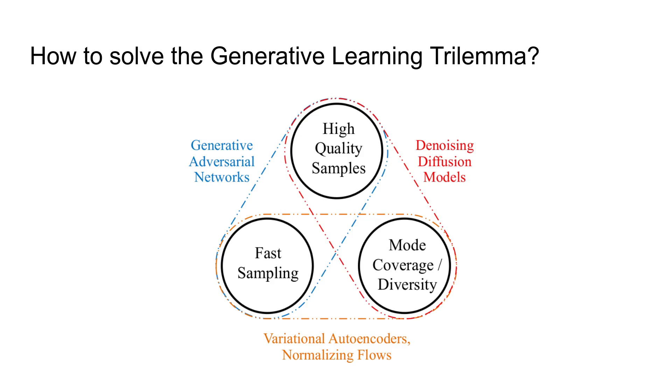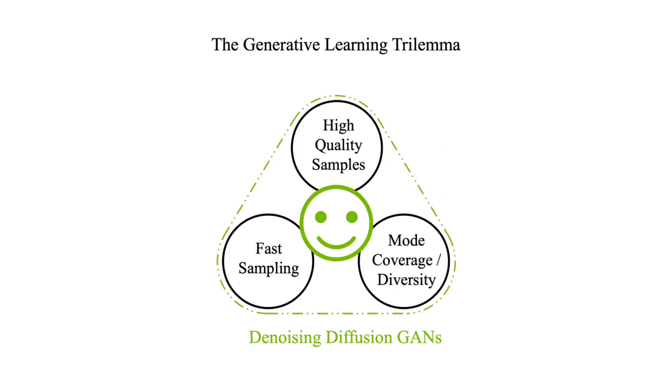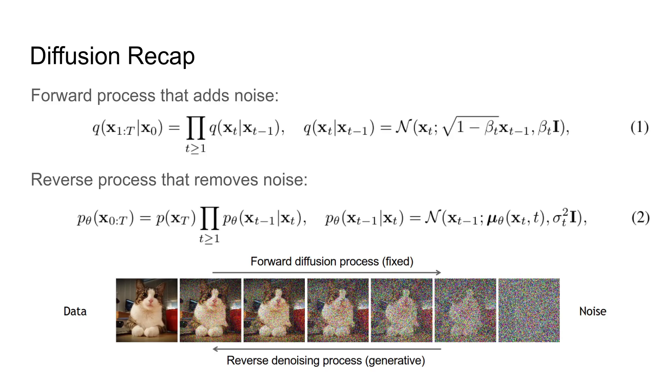The authors call this issue the generative learning trilemma. It seems like we don't have a model that can do all of these. The method proposed in this paper is called denoising diffusion GANs. The authors argue that this method effectively solves the generative learning trilemma, offering all three features at once.